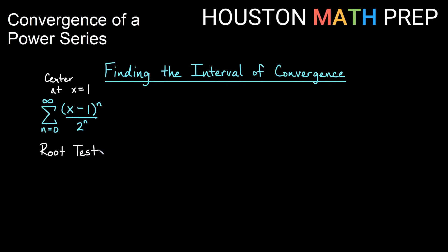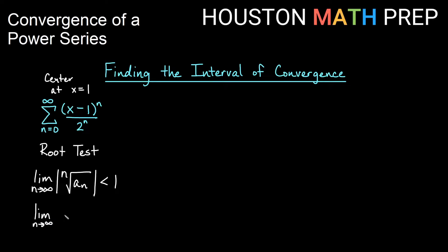Using the absolute value version of the root test, we take the limit as n approaches infinity of the absolute value of the nth root of our series, and we want that to be less than 1 for convergence. So we have the limit as n approaches infinity of the absolute value of the nth root of (x minus 1) to the n over 2 to the n, and we want that less than 1.